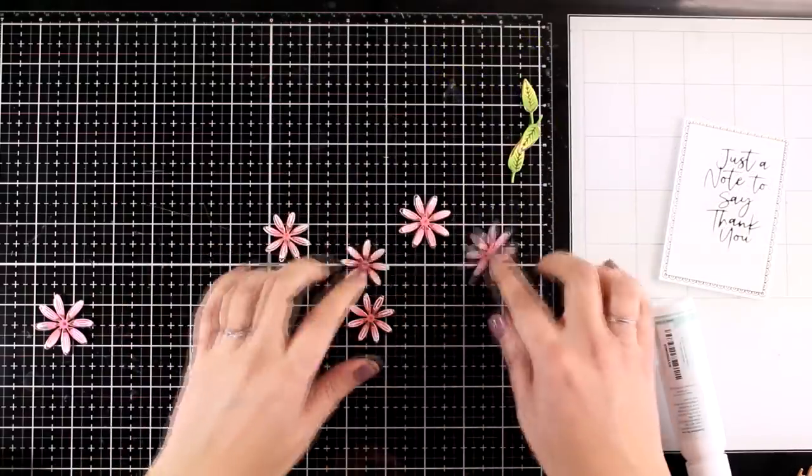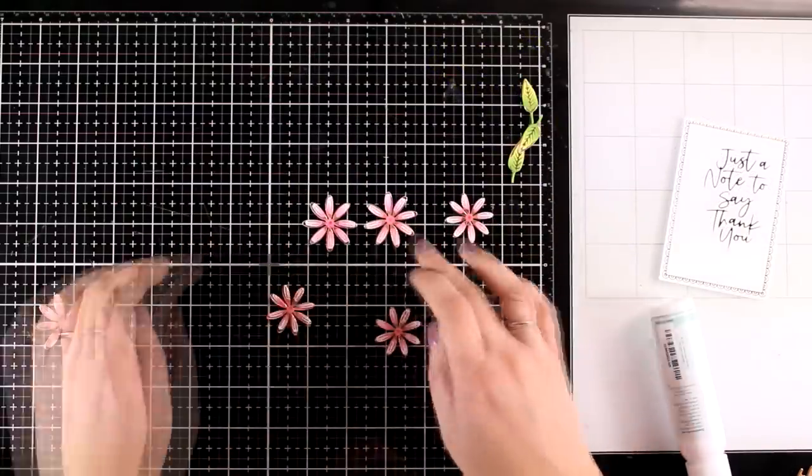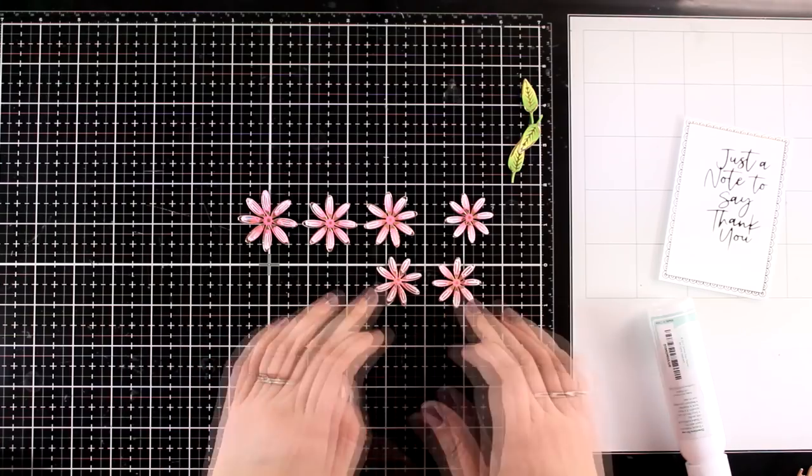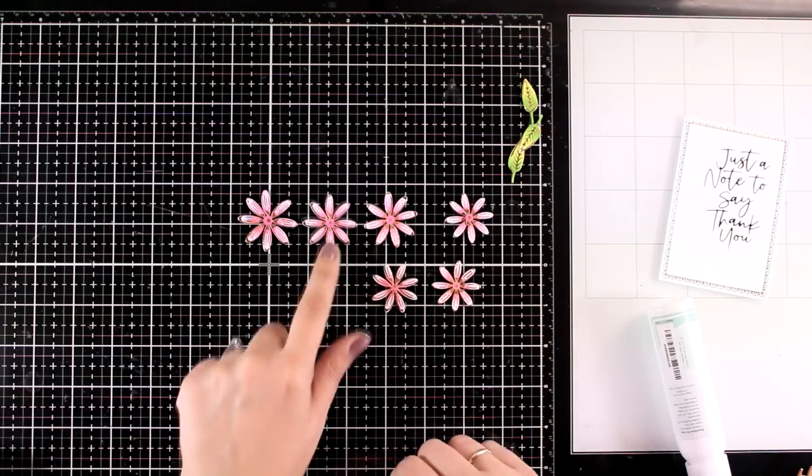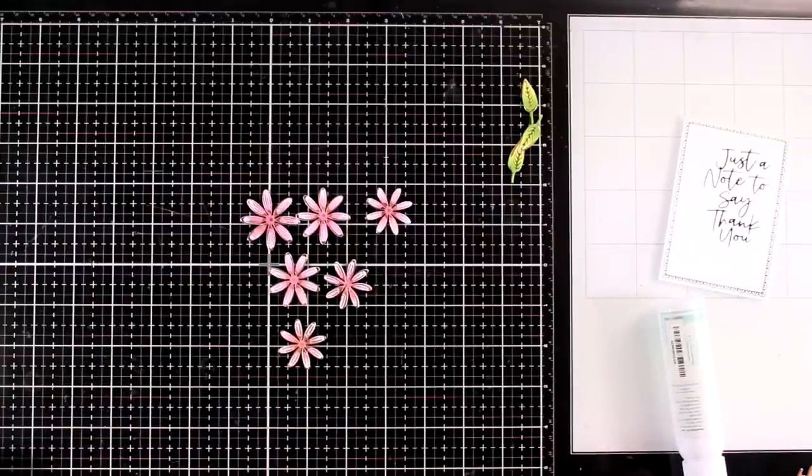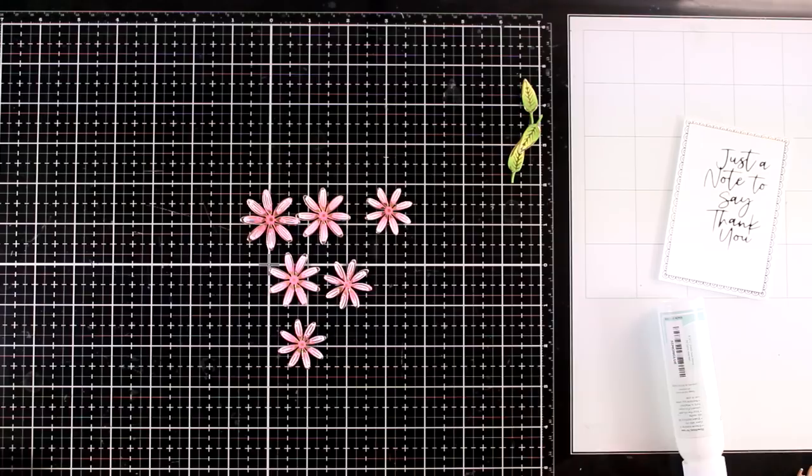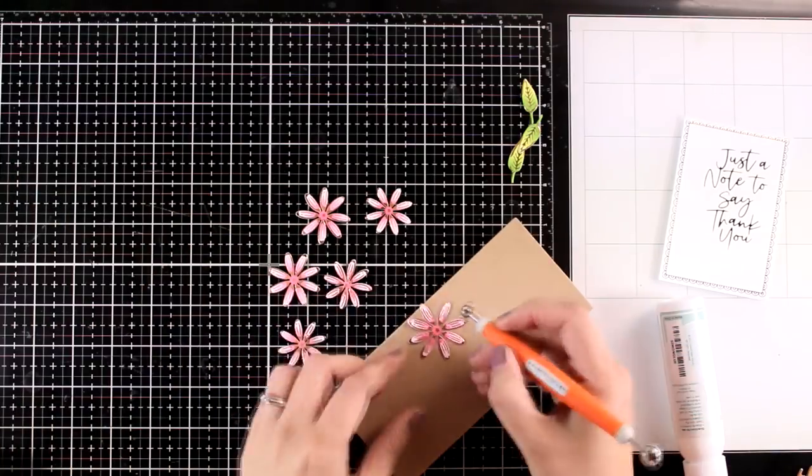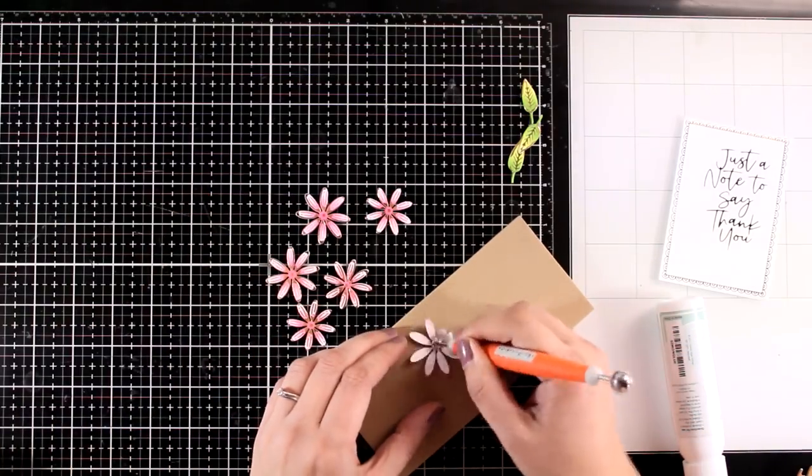The daisies have three sizes so I'm going to use for one flower three of the sizes, large, medium and small to fluff it up. I'm going to make a second flower that is just the middle and the smaller one and the third flower which is going to go at the bottom I'm going to keep it quite flat with just one layer.